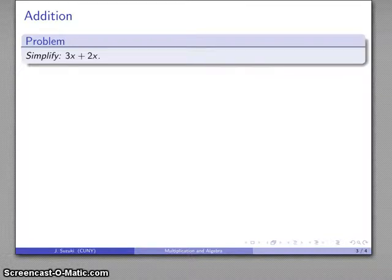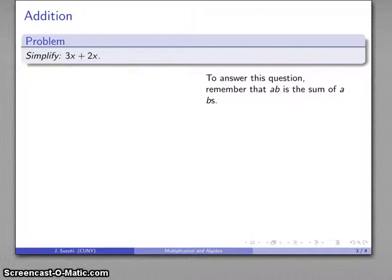For example, 3x plus 2x, what can you do to simplify that? Well, again, to remember how to answer this question, just remember that a times b is the sum of a b's.